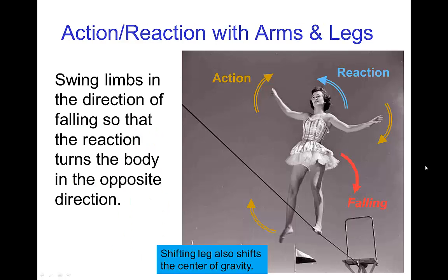When the tightrope walker does not have a pole, they can use their arms out to the sides for the same purpose. Shifting the arms allows for rapid shifts of the center of gravity to maintain balance. But to recover balance, the walker can rotate the arms — and in this case the walker is also moving her leg — rotating them in the direction of the fall, and then the resulting reaction helps them to recover balance.